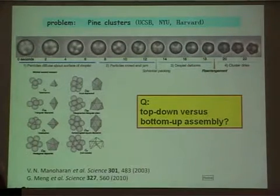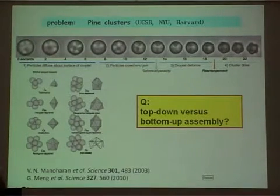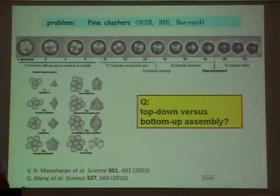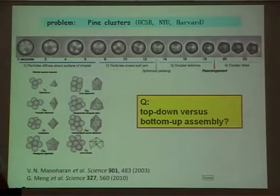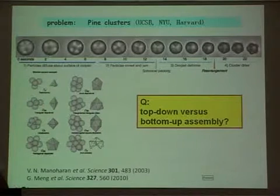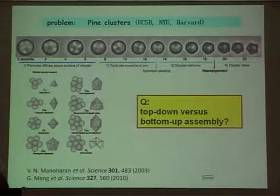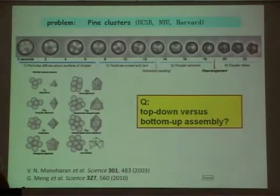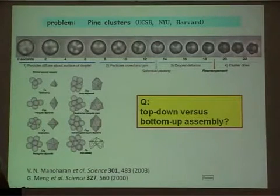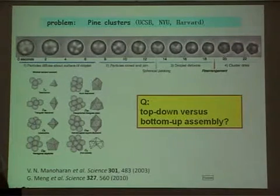There is a problem: we were not the first to make such clusters. David Pine and Viney Manoharan — who was a student at the time — were making very similar clusters by a very different method: freezing spherical clusters into shape and harvesting them. Most of the small clusters we made were structurally the same as those already produced. So the question became: why bother with this spontaneous self-assembly route when there were already good ways to make the same structures?